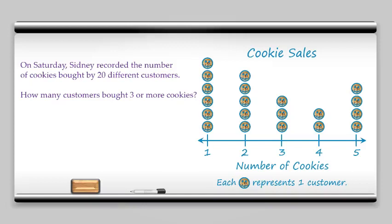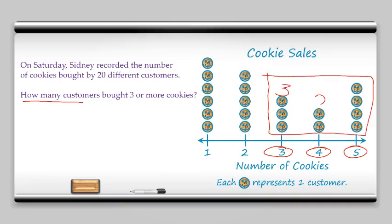How many customers bought three or more cookies? Three or more will be three or four or five and we're looking for how many customers. Remember the customer area is above the number line. So we had three customers here, two customers here, and four customers here. So if we want to know how many that is we're just gonna add those up and we see that that's nine customers.